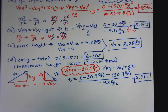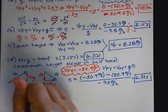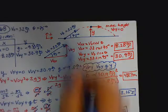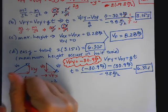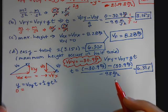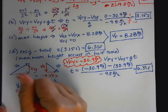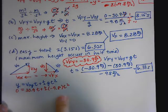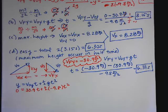A third way: you could use Y equals V-naught Y times T plus one-half G T squared. From launch back to launch height, the vertical displacement is zero, so 0 equals 30.9T plus one-half times negative 9.8 times T squared. The problem is you'd have to use the quadratic equation, which is more work and more likely to cause mistakes — but it does work.